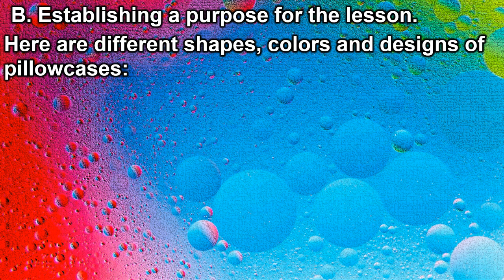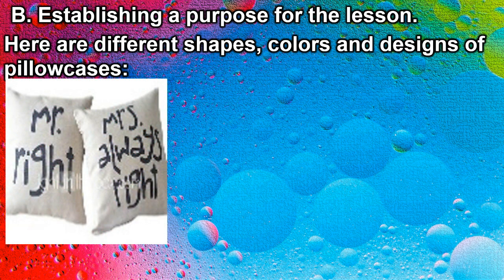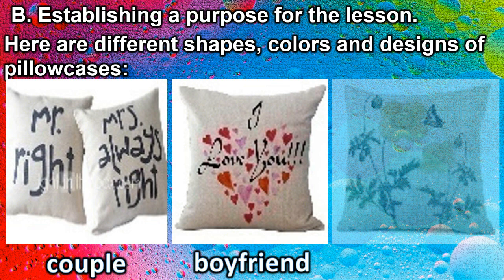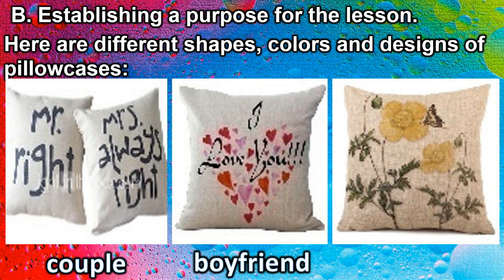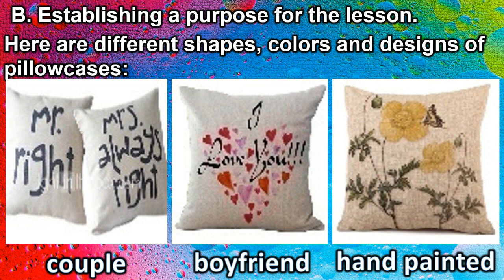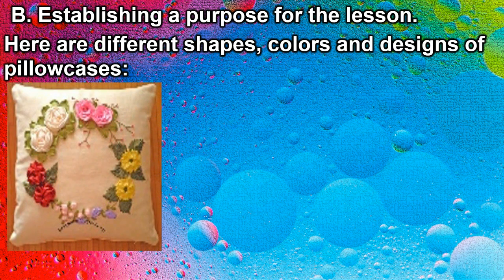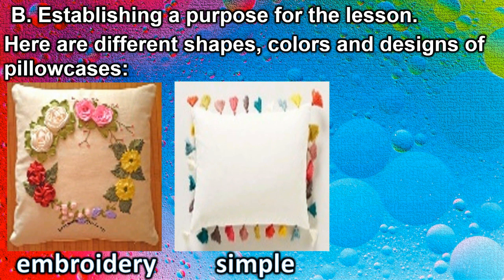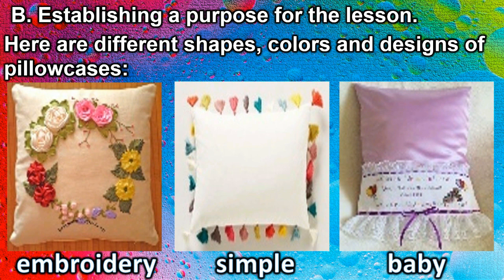Now let's go to the second part of our lesson: establishing a purpose. Here are different shapes, colors, and designs of pillowcases. The first design is called 'couple.' Another is 'boyfriend,' pertaining to love. The third is hand-painted — you can do flowers or other designs. Another is embroidery, then a simple design, and finally 'Baby,' using a shiny, silk, and smooth fabric that is good for a baby.